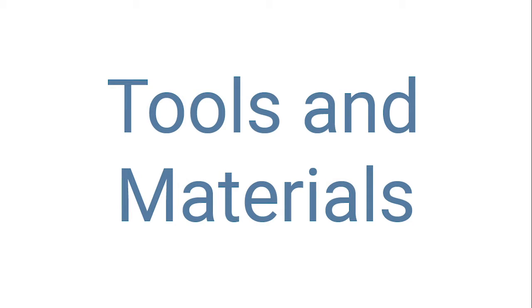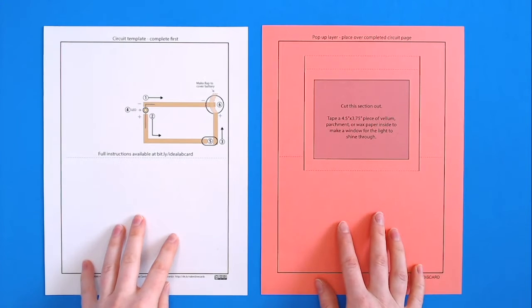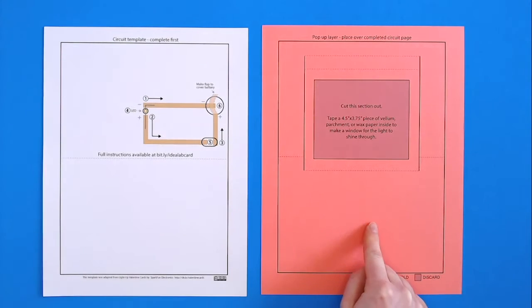To follow along with this video, you'll need two pieces of letter-sized paper to print the templates on. A thick paper like cardstock works best. A downloadable template is linked in the description below. There's a page for the circuit and a page for the pop-up.